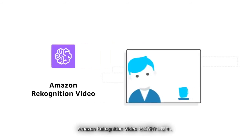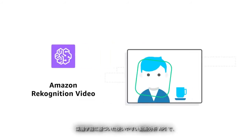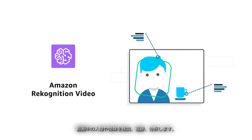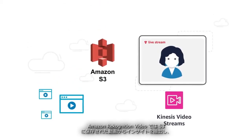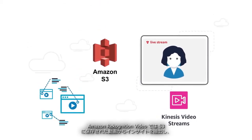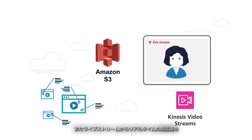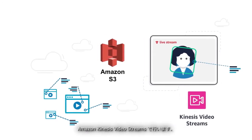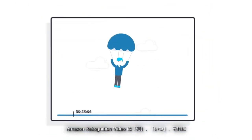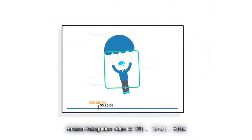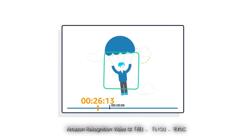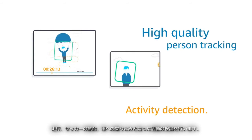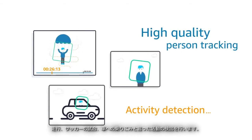Introducing Amazon Rekognition Video, the easy-to-use API for deep learning-based analysis to detect, track, and analyze people and objects in video. Amazon Rekognition Video allows customers to extract insight from videos stored on S3, as well as real-time face recognition from live stream via Kinesis Video Streams. It uses the visual, temporal, and motion information from the video to deliver high-quality person tracking and detection of activities like running, playing soccer, or getting into a car.